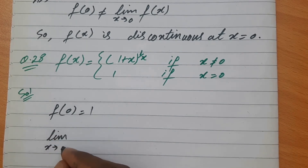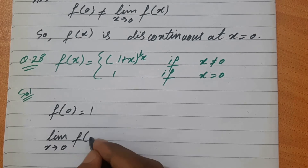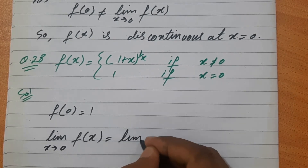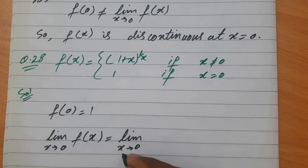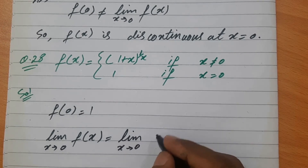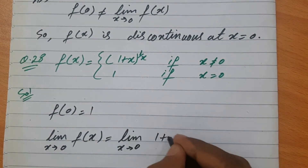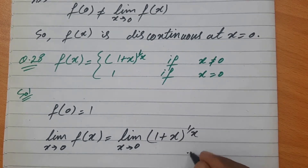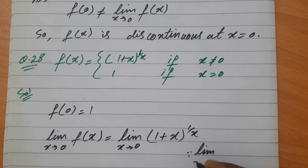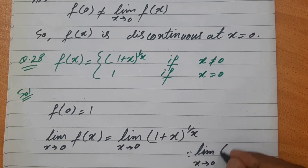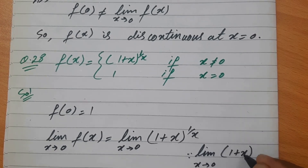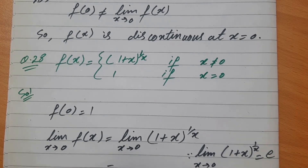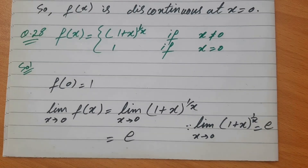अब limit find करते हैं: limit x→0 f(x) = limit x→0 (1+x)^(1/x)। हमें पता है जब limit x→0 हो, (1+x) हो और उस term का reciprocal power में हो, तो यह e के equal होता है। तो यह पूरी term → e।